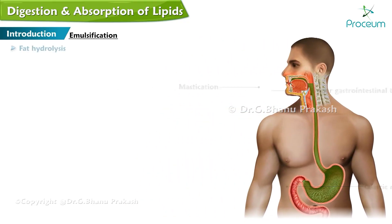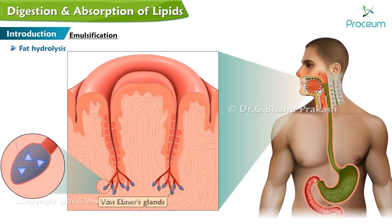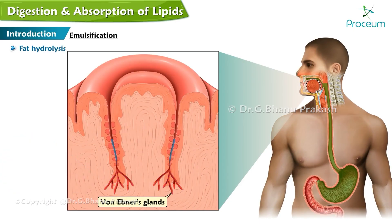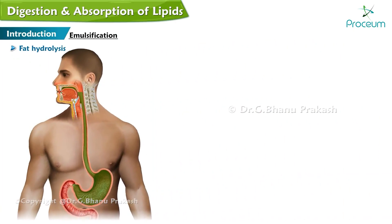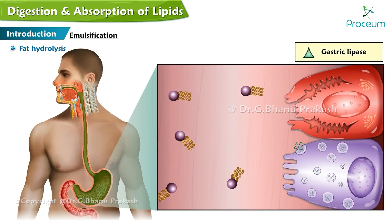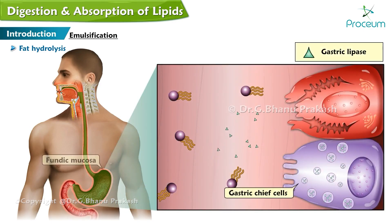Fat hydrolysis begins by the actions of lingual lipase, which is secreted from von Ebner's glands near the circumvallate papillae, and gastric lipase, which is secreted by gastric chief cells of the fundic mucosa in the stomach.